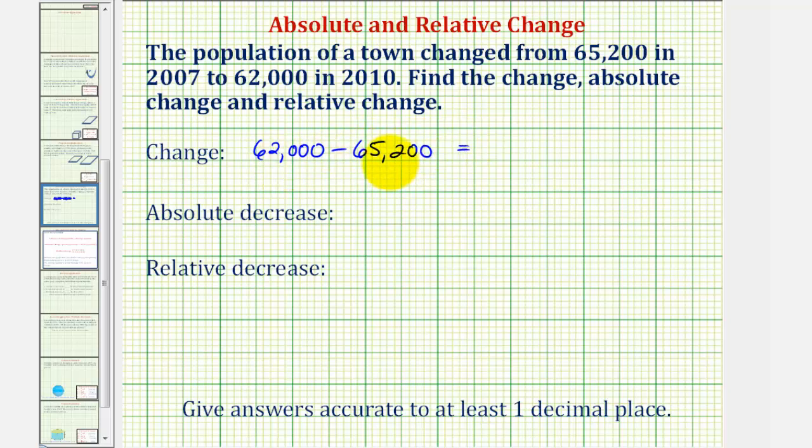And notice how this difference is negative. It's negative 3,200 people, which again indicates that the population is decreasing.